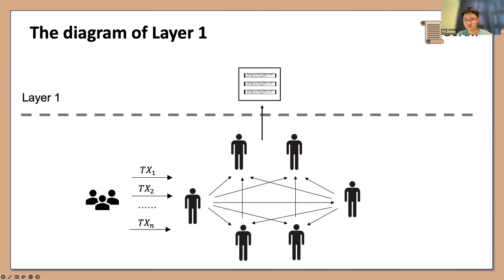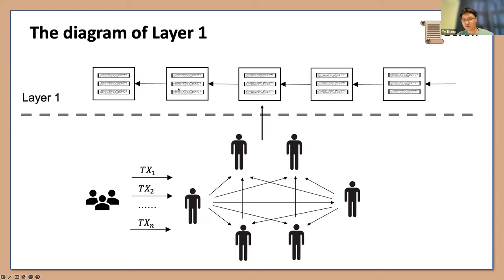Let's start with the traditional diagram of Layer 1. Users send transactions that get broadcasted in a P2P network, and miners or validators submit blocks. Then everyone downloads the block and re-executes all transactions to reach consensus. For every block, all nodes need to do the same computation over and over again. With maybe 1 million nodes in the network doing exactly the same type of computation, it's clearly redundant and inefficient, but this is exactly what brings you security and decentralization guarantees.